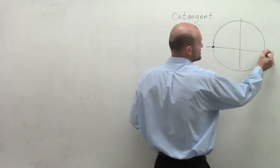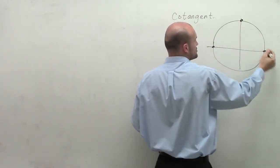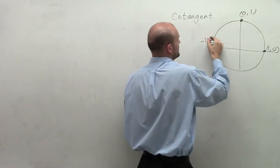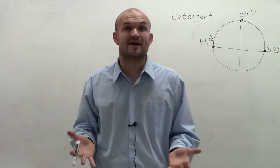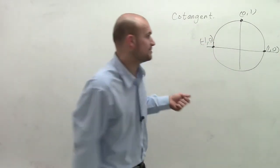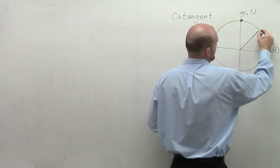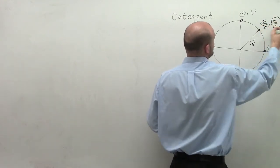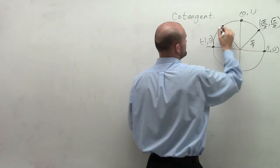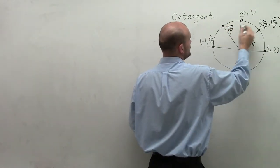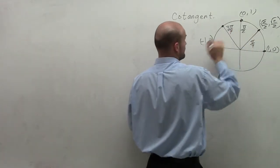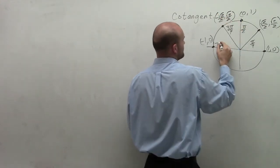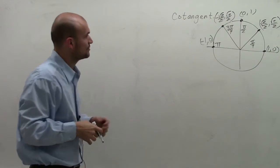Let's map out our first couple of coordinate points. Our first coordinate point is (1, 0), here I have (0, 1), and here I have (−1, 0). The angles I want to evaluate over the first period are: 0, which we already have; π/4, which is (√2/2, √2/2); π/2, which is (0, 1); 3π/4, which is (−√2/2, √2/2); and π, which is (−1, 0).